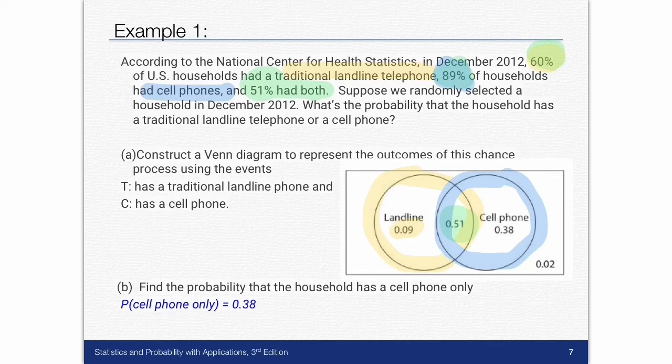Now I always make sure that all of these add up to 1 because all your probabilities have to add up to 1. So I take 0.09 plus 0.51 plus 0.38. That doesn't quite add up to 1. It adds up to 0.98. So that means 0.02 is left. So I got to include that 0.02 in my sample space out here where that means they don't have a landline nor do they have a cell phone. So then I've completed my Venn diagram.